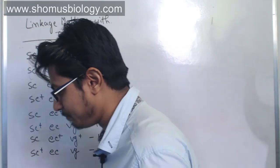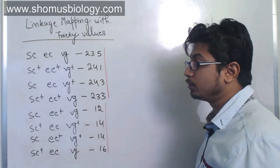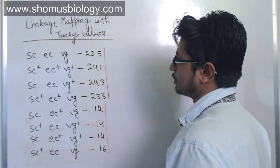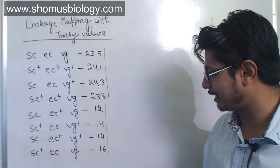For this type of question they can ask what is the recombination frequency between two particular genes — for example, between SC and EC, between SC and VG, or between EC and VG. This is really difficult to figure out because there is no obvious clue in the dataset.